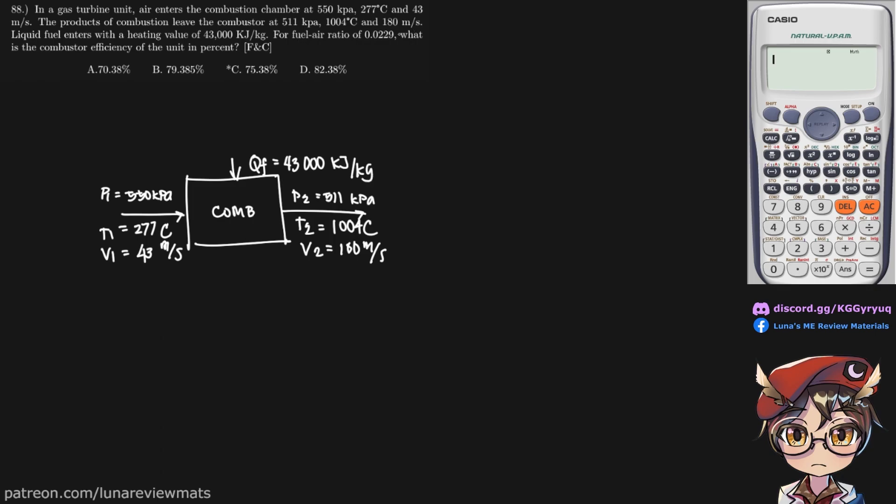For fuel air ratio of 0.0229, fuel air ratio. What is the combustor efficiency of the unit in percent? So we're looking for EC in percent.